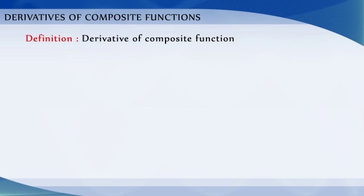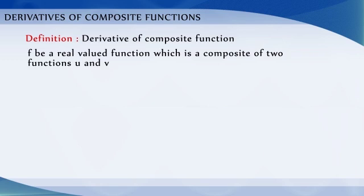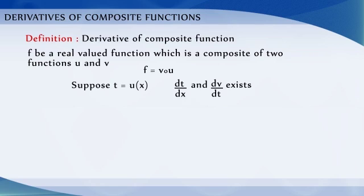We now define the derivative of a composite function. Let f be a real-valued function which is a composite of two functions u and v, that is f = v ∘ u. Suppose t = u(x), and if both dt/dx and dv/dt exist, then df/dx = dv/dt × dt/dx. This is known as the chain rule. The chain rule may be extended as follows.